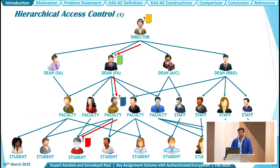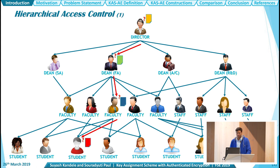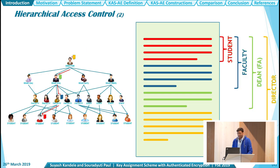Suppose there is a hierarchical access structure as shown in the slide here, where the director is at the top and she has some information, say a yellow file. She wants to impart a part of this file to the dean FA, and he gets a green file. The dean FA further gives a part of his file to a faculty, which we call a blue file. And the faculty gives a part of his blue file to a student, which we call a red file. These files can be represented in a format where a big file belongs to the director — the yellow file containing all four parts: red, blue, green, and yellow — and the student contains only the red part.